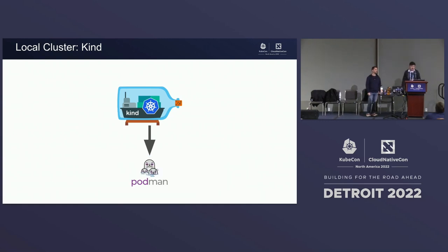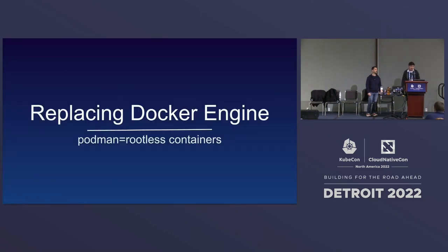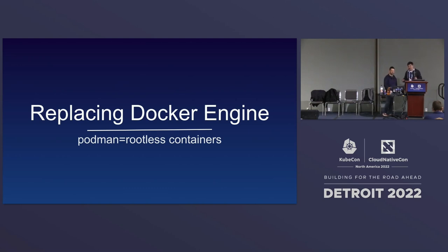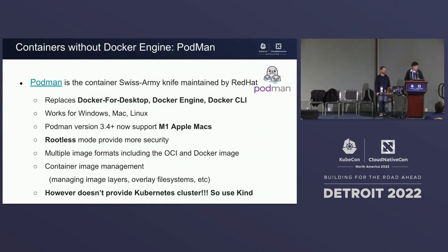Podman is a solution from Red Hat, and it's replacing the Docker Engine requirement for your laptop. It also provides rootless containers — everybody says this is super cool and provides a much smaller footprint. Podman is a Swiss Army knife maintained by Red Hat that replaces Docker Desktop, Docker Engine, and Docker CLI. Podman itself doesn't run Kubernetes — it's just a replacement for Docker Engine and Docker CLI. It works for Windows, Mac, and Linux, and M1 Macs are also supported.